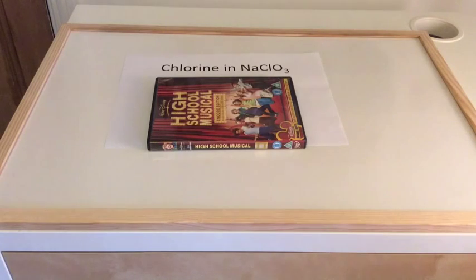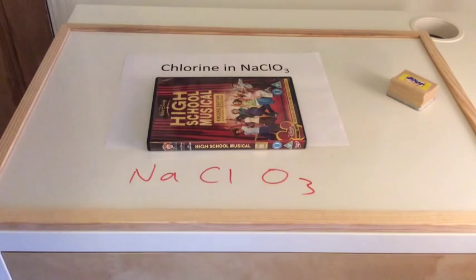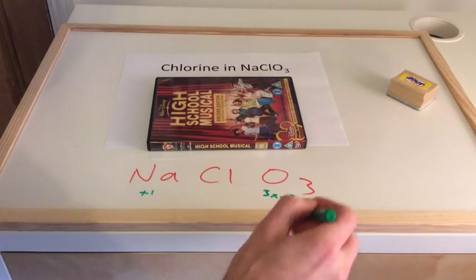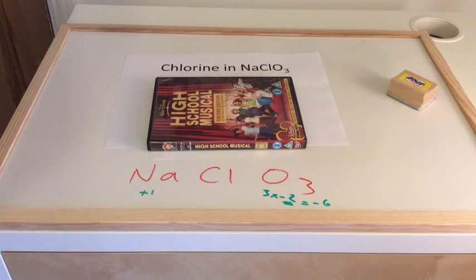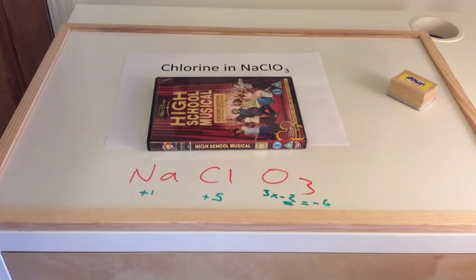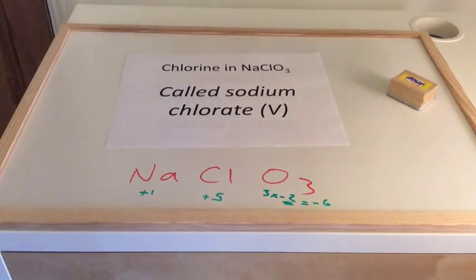Here's another one. What's the oxidation number of chlorine in NaClO₃? You can have a go at naming this one as well. We've got sodium plus 1, and 3 oxygens, so that's 3 times minus 2 each, giving minus 6. So what must the chlorine be to keep this neutral? It's obviously plus 5. The previous one was called sodium chlorate(I), so this is obviously sodium chlorate(V).